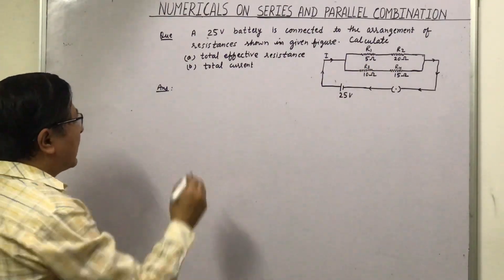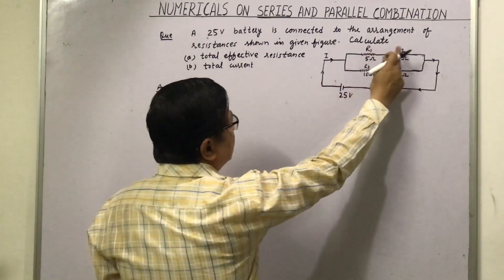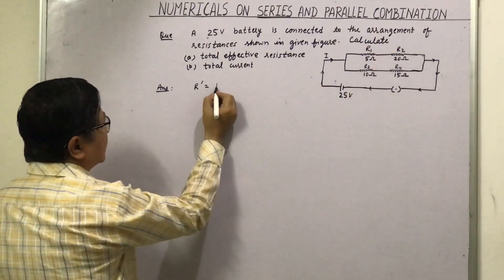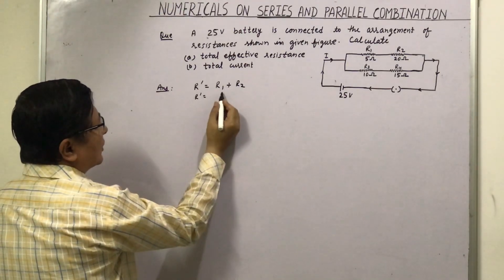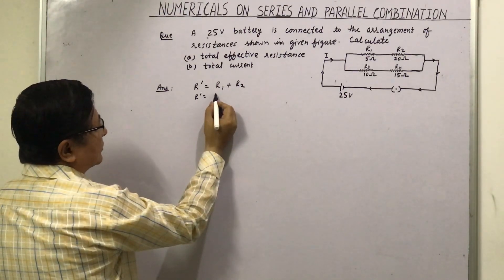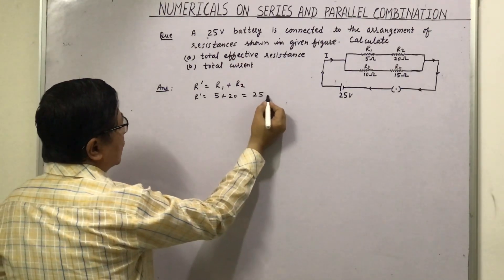So first we will find R dash, which is equal to these two resistances R1 plus R2 which are connected in series. So it becomes R dash is equal to R1 plus R2, that is equal to 5 plus 20, and that is equal to 25 ohm.